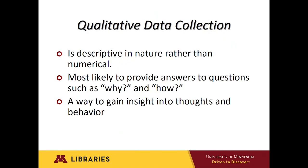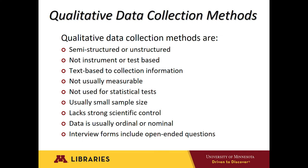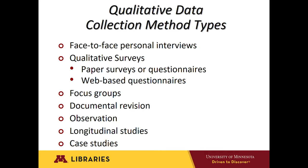Data obtained using qualitative data collection methods can be used to find new ideas, opportunities, and problems; test their value and accuracy; formulate predictions; explore a certain area in more detail; and explain the numbers obtained using quantitative data collection techniques. Since qualitative data collection methods usually do not involve numbers and mathematical calculations, they are semi-structured or unstructured, usually involve small sample sizes, and lack strong scientific controls. Qualitative data collection methods employ many of the same methods as quantitative, except that instead of structured or closed, they are semi-unstructured and open-ended. Some of the most common qualitative data collection techniques include open-ended surveys and questionnaires, interviews, focus groups, observation, and case studies.